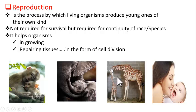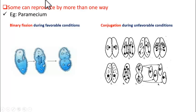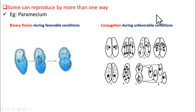Do all living organisms reproduce in a similar way? Definitely not. Different organisms reproduce in different ways. Some organisms even reproduce in more than one way. For example, paramecium is a unicellular protozoan. When conditions are favorable — when food is available and temperature is favorable — it undergoes reproduction by a method called binary fission, which is the splitting of an organism into two daughter organisms. It splits into two daughter organisms during favorable conditions.